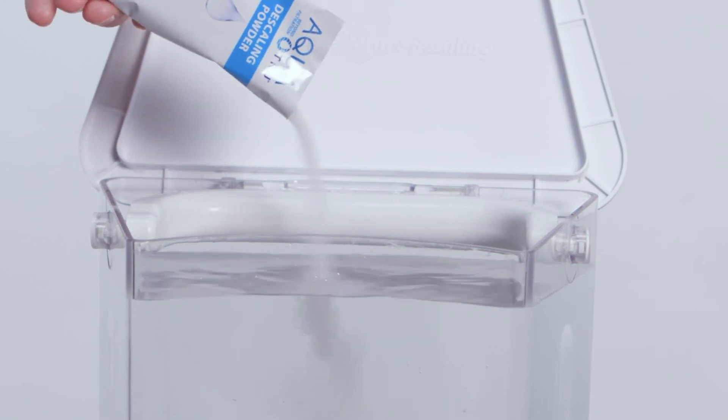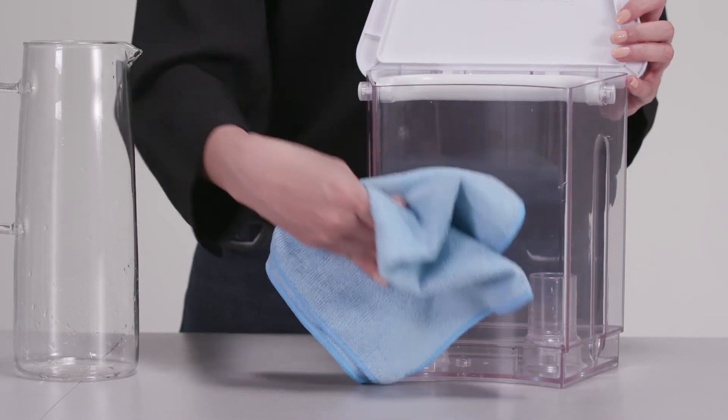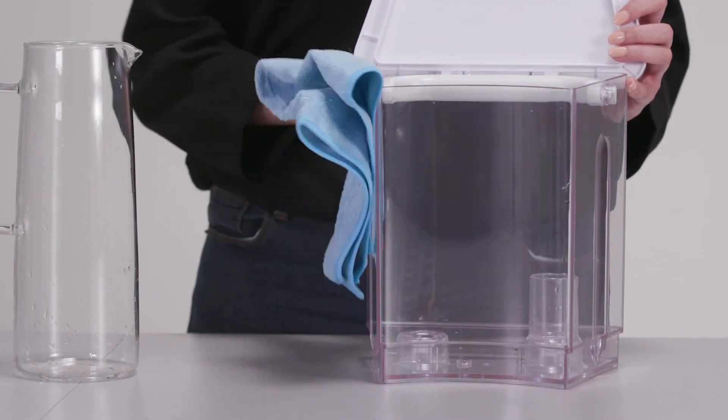If mineral deposits are present, fill the tank with a solution of warm water and one packet of AquaTrue descaling powder. The solution will help dissolve the mineral deposits, making it easier for you to wipe clean with a soft sponge and soapy water.